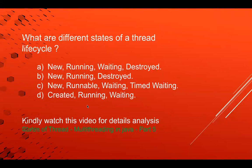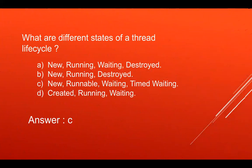The correct answer is C: new, runnable, waiting, and timed waiting — these are the appropriate states of the Thread class. Some options contain invalid states: 'create' is not a state of the Thread class, 'running' is a fundamental concept but not an actual enum state, and 'destroy' is also not a valid state. Option C is correct because all states mentioned in it are valid.